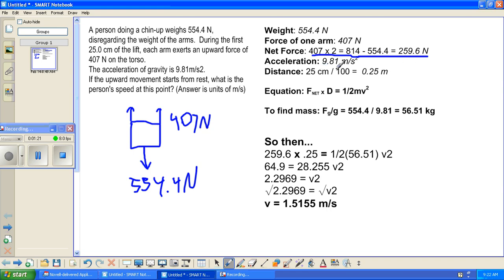The acceleration of gravity is 9.81 meters per second. And our equation is work, which is net force times distance, equals kinetic energy, which is one-half m times v squared.